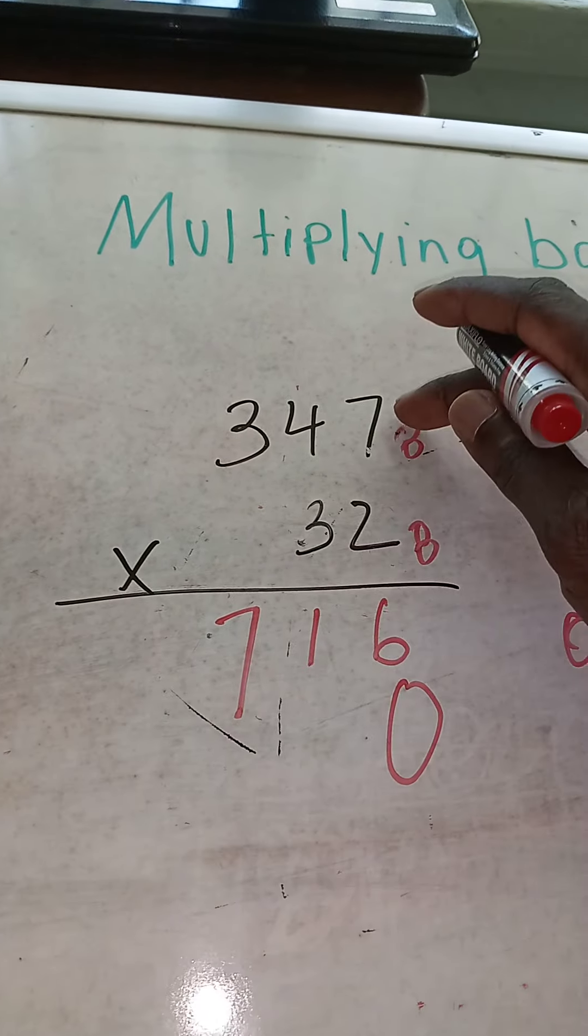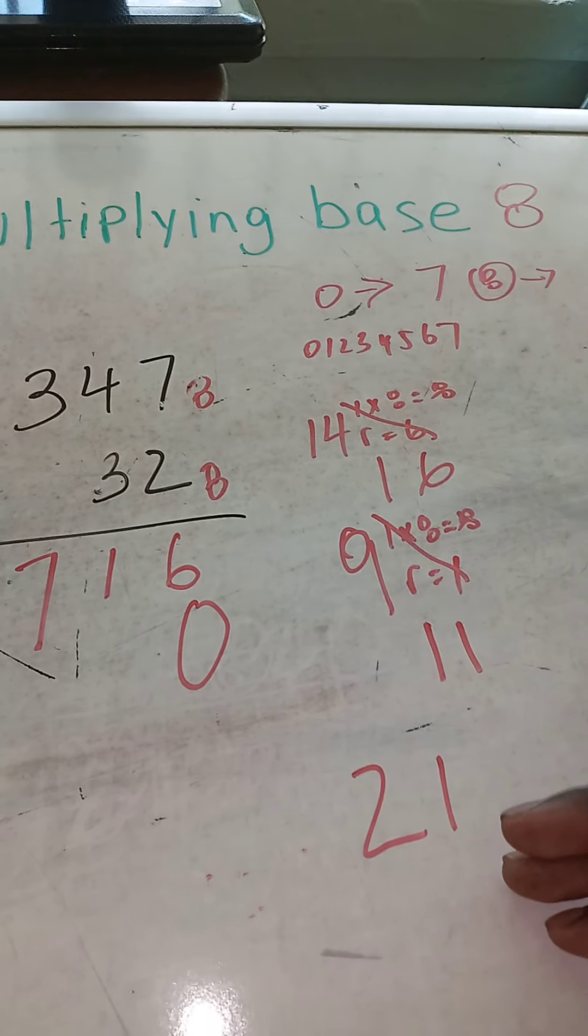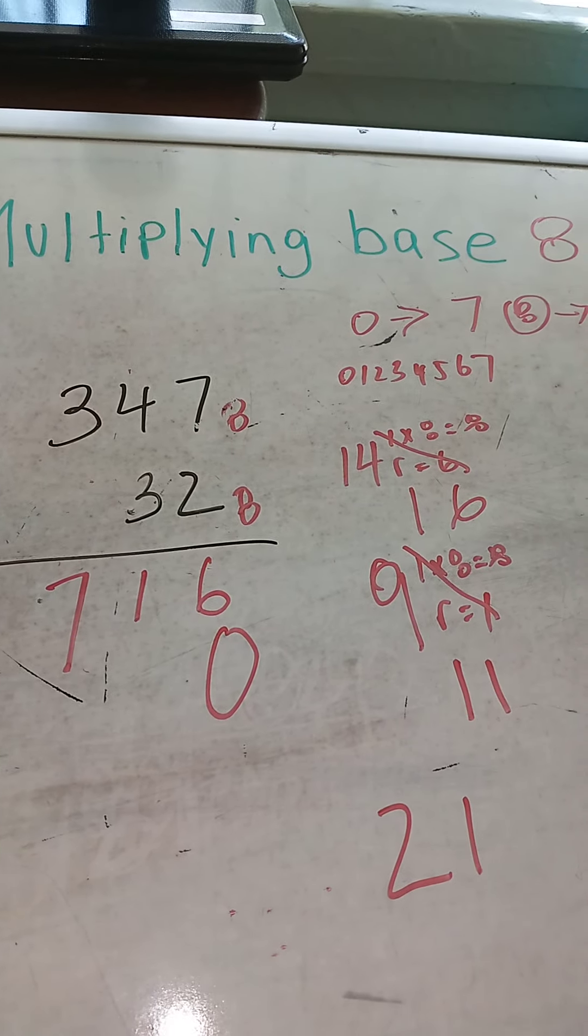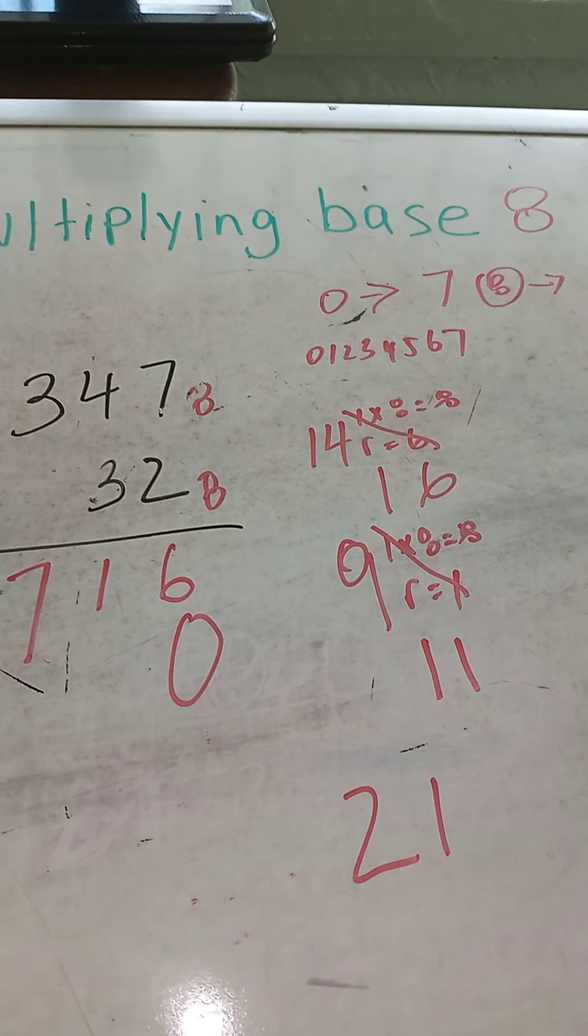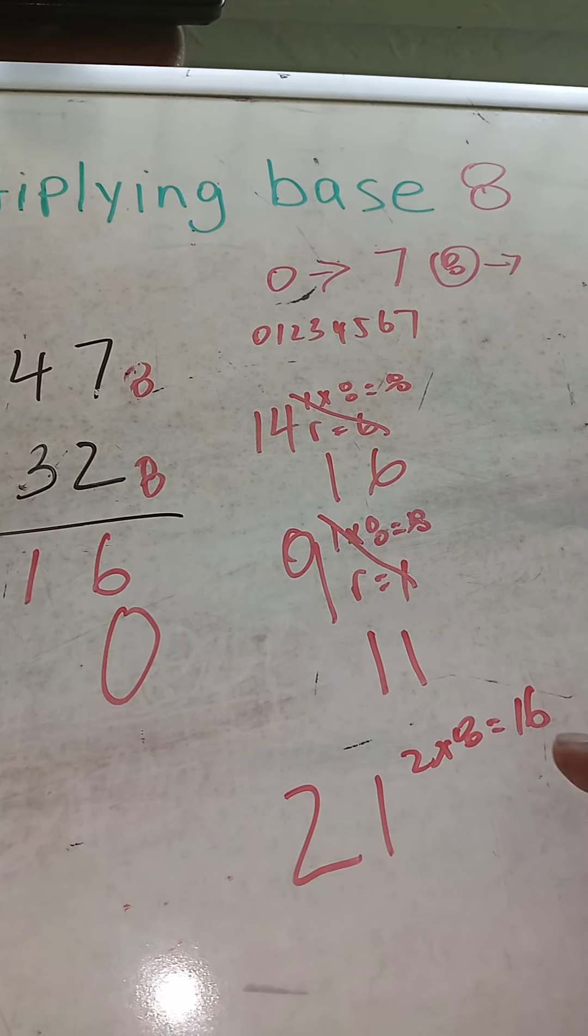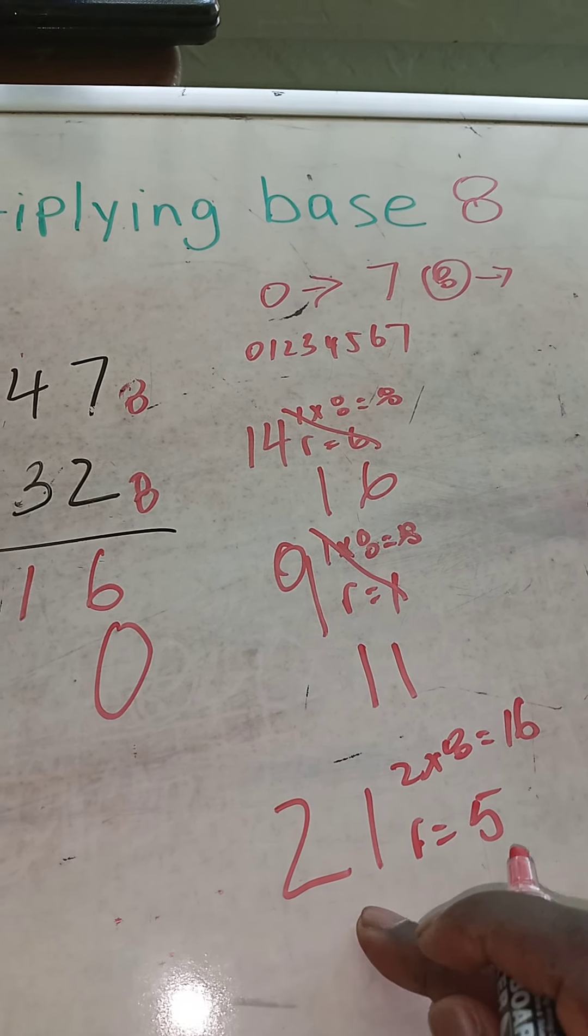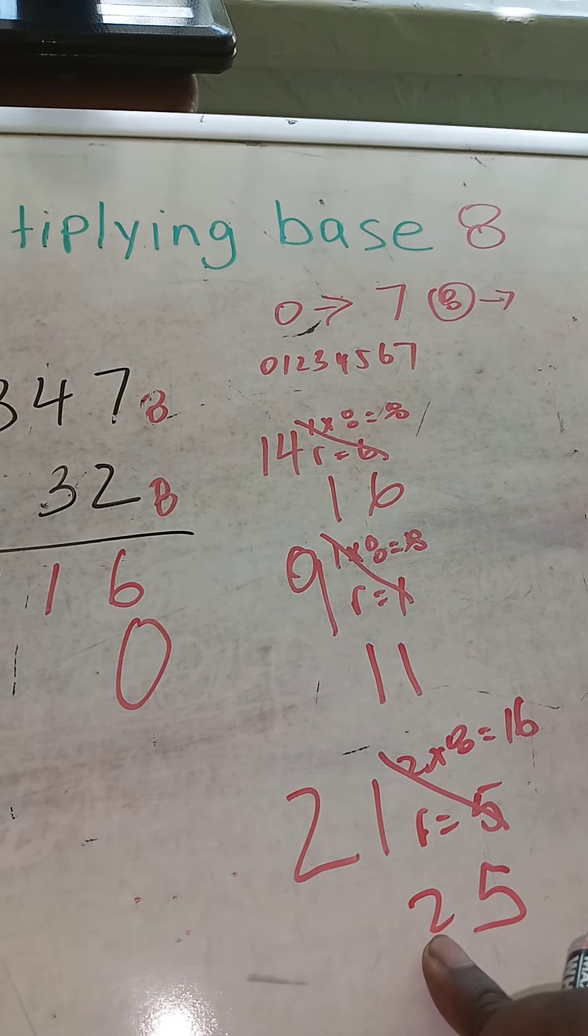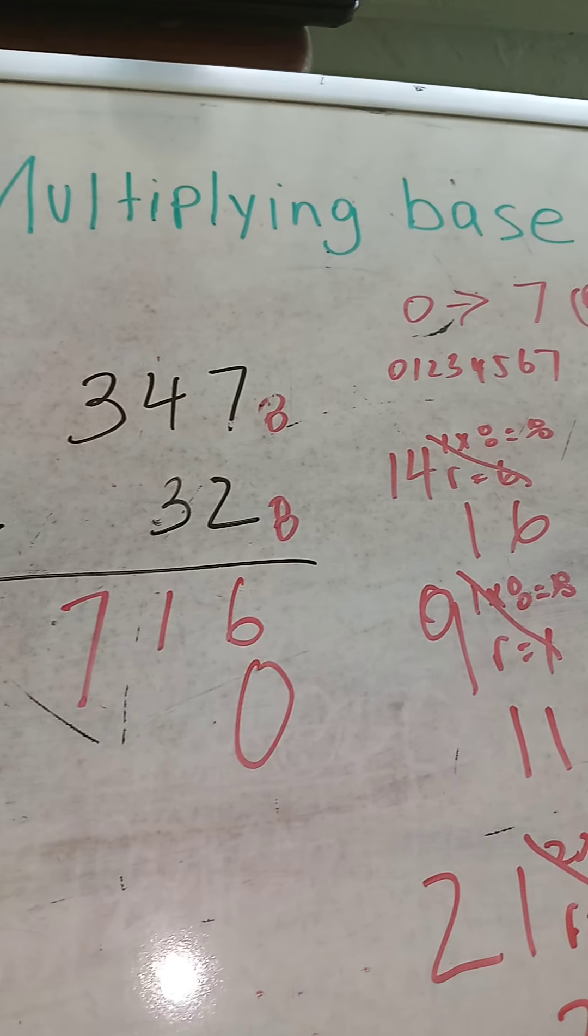3 times 7 is 21. We can't write 21, so what do we write? How many times can 8 go into 21? 2 times 8 equals 16. 16 from 21, remainder equals 5. 16 plus 5 equals 21. So 2, 5 would be the representation for 21. 2 times 8 is 16 plus 5 equals 21. So put down 5.